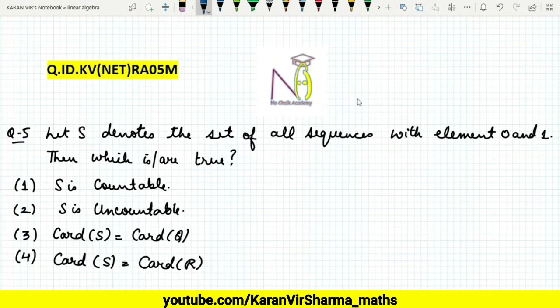Hi friends, welcome to my YouTube channel. This is the fifth question on real analysis. The question is: let S denote the set of all sequences with element 0 and 1. Which of the following statements are true? S is countable, S is uncountable, the cardinality of S equals the cardinality of Q, and the cardinality of S equals the cardinality of reals.